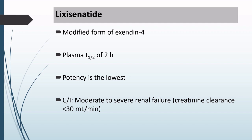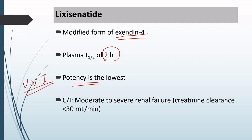The next drug is Lixisenatide, a modified form of Exendin-4. The plasma T-half of this drug is 2 hours. Lixisenatide is the least potent GLP-1 receptor agonist. It is also contraindicated in patients with moderate to severe renal failure — that is, patients whose creatinine clearance is less than 30 ml per minute.